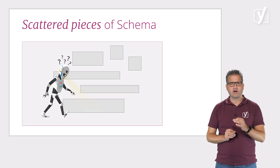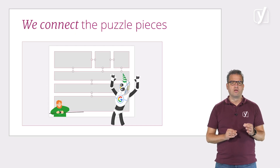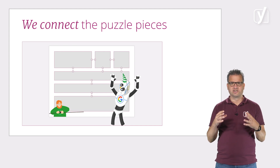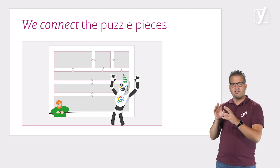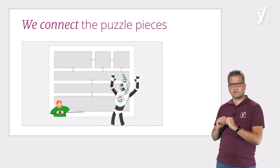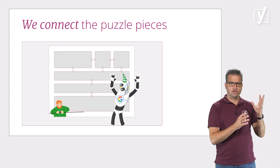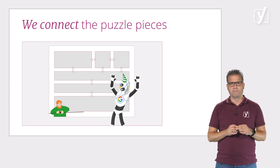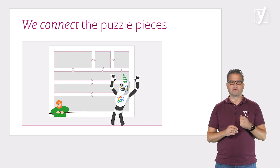We don't only describe content with scattered pieces of schema. With our implementation, we connect the puzzle pieces into a story. We don't have a blob that says, hey, there's an article on this page, and then another that says, hey, there's a person on this page, and so on. Instead, we tie everything together into a structured graph.